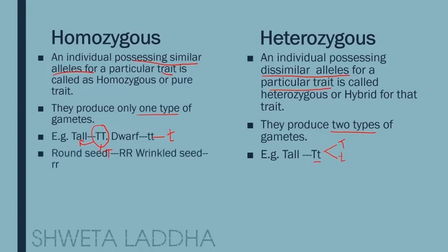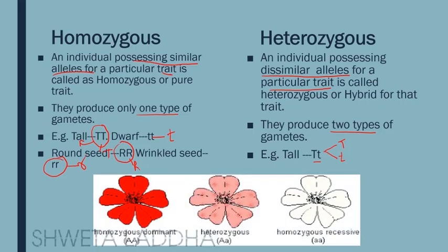One more example for homozygous: capital R capital R produces only one type of gamete, capital R. Wrinkled seeds small r small r — homozygous pure trait — produce only one gamete, small r. You can also see homozygous with similar alleles for red color: capital A capital A. Homozygous recessive is small a small a. Dominant characters are represented by capital alphabets; recessive characters are represented by small alphabets.